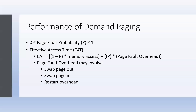If the page fault probability value is exactly 1, it means that every time a page is needed, a page fault will occur — 100% of the time, whenever a page is required, there must be a page fault.